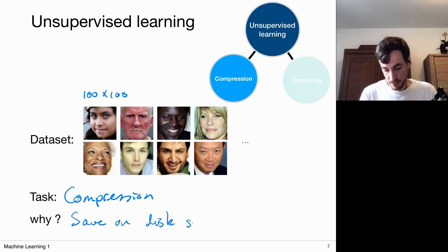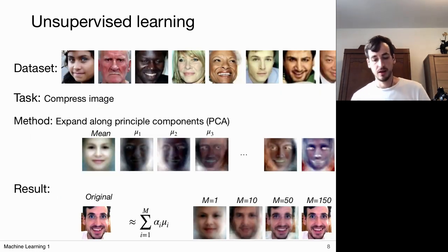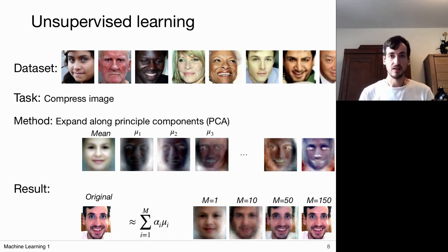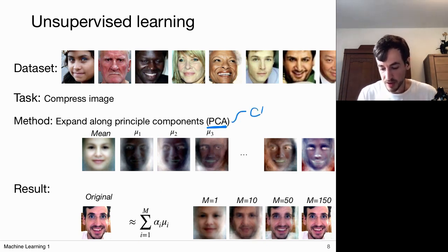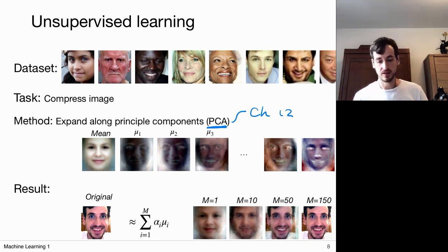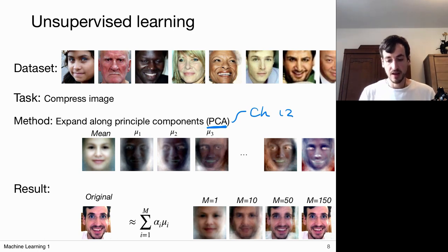There are several ways of doing compression. In this example I'll take a closer look at Principal Component Analysis (PCA). I won't go into too many specific details but will stick to a high level. PCA will be covered in Chapter 12 and in one of the later videos of this course.